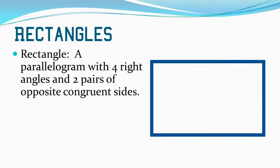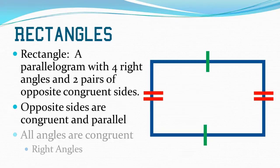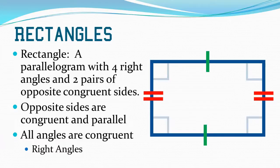For example, a rectangle is a parallelogram with four right angles and two pairs of opposite congruent sides. So, to keep that in mind, I need to know that opposite sides are congruent. If I know one measure, I know the other. This helps me infer when I'm trying to find missing sides. I also know that all angles are congruent, which means they're all right angles.